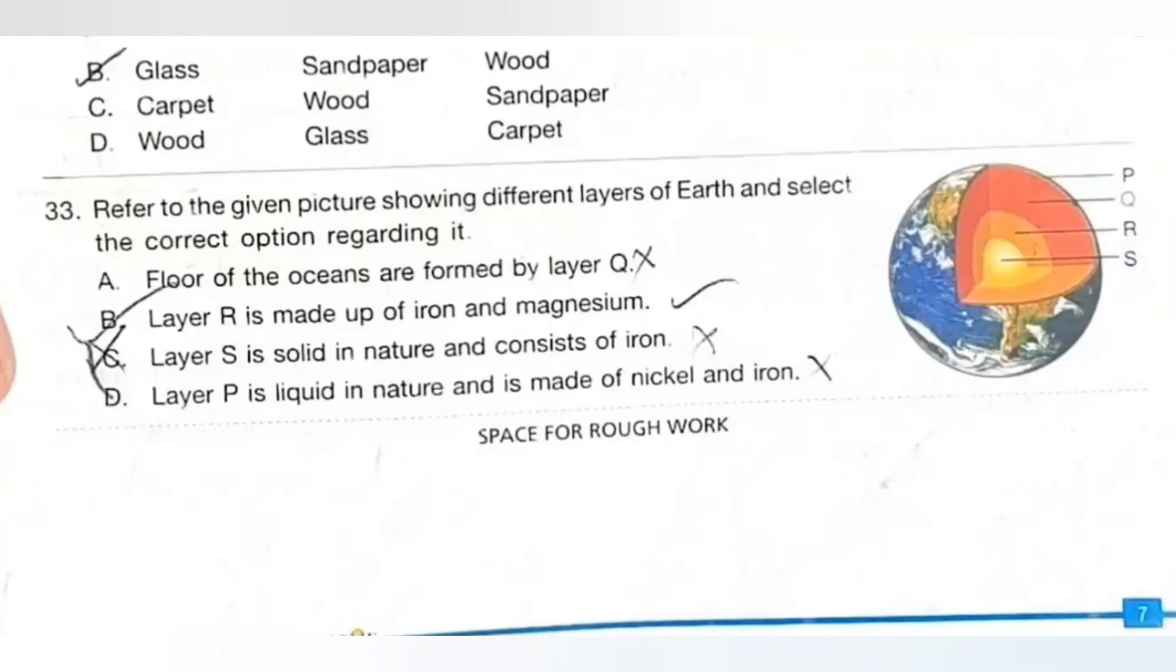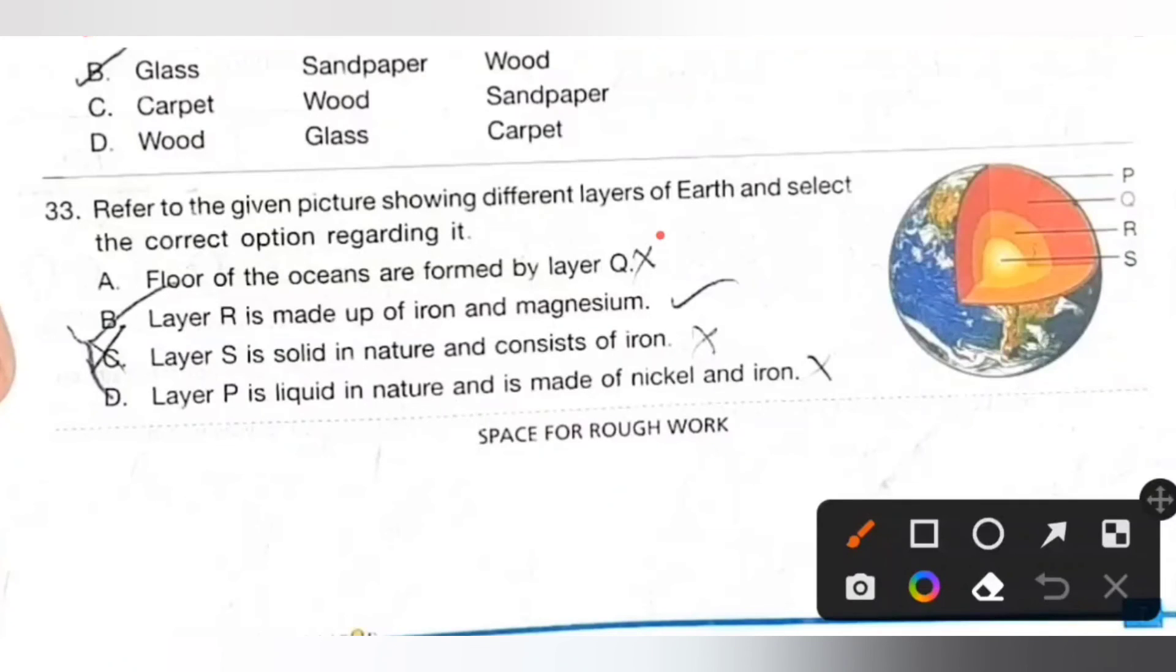Thirty-three: Refer to the given picture showing different layers of the earth and select the correct option regarding it. A: Floor of the oceans are formed by layer Q, it is incorrect. B: Layer R is made up of iron and magnesium, it is also incorrect. C: Layer S is solid in nature and consists of iron, it is the correct one. Layer S is nothing but inner core. So option C is the correct answer.